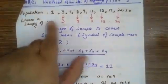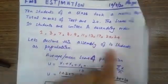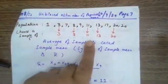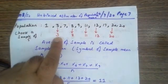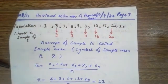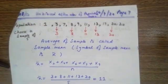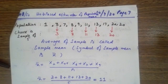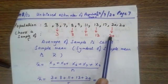Now from this population — the same marks written over here — we choose a sample of 5. The sample chosen from the population is: 3, 8, 11, 13, 20. The population is of 10 people; the score of 5 people selected from them is the sample.